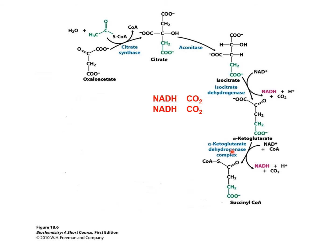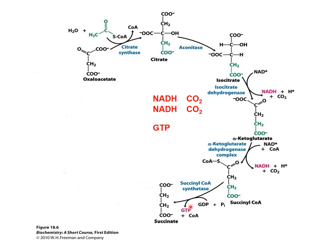This process is very similar to the conversion of pyruvate into the 2-carbon acetyl coenzyme A by the enzyme pyruvate dehydrogenase, which is also a multi-enzyme complex. The presence of the thioester group has made succinyl coenzyme A a high energy molecule, whose hydrolysis can be used to make 1 GDP molecule. 1 GDP is equivalent to 1 ATP, and this reaction is catalyzed by the enzyme succinyl coenzyme A synthetase.